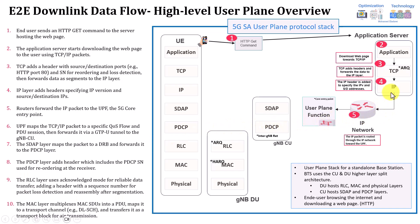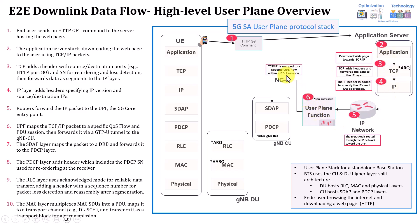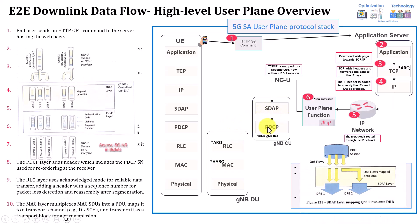Once received from the IP layer, the IP packet is routed through the IP network towards the UPF — the user plane function — which is the core entry point of the 5G core network. Once the TCP/IP packets arrive at the UPF, it maps them into a specific quality of service, determining whether this data needs a specific QoS and within which PDU session. It then forwards the data through the NG interface to the SDAP layer.